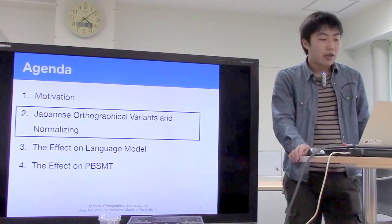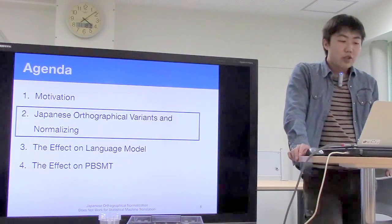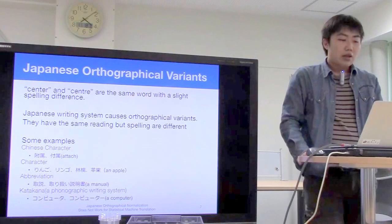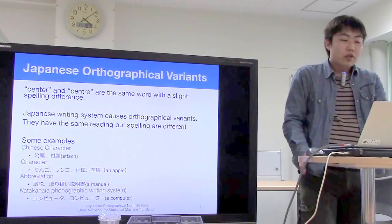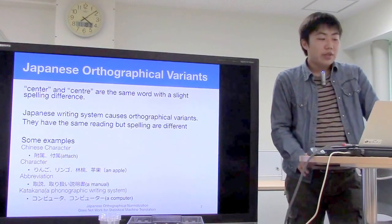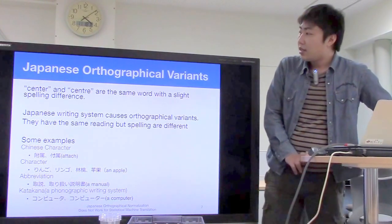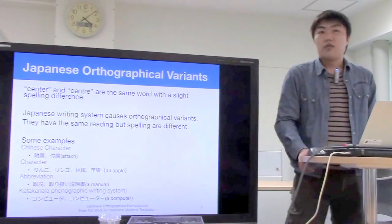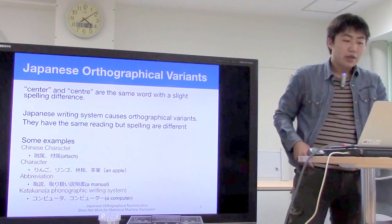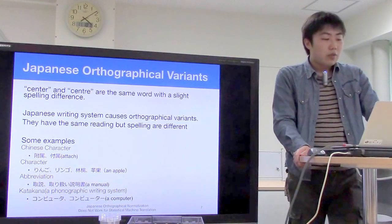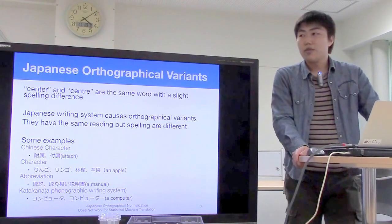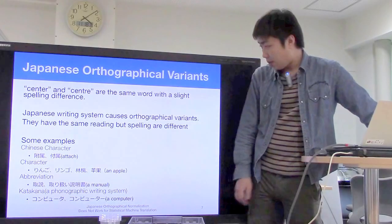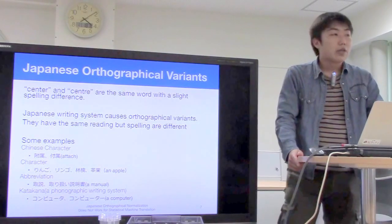Next, I'll explain what Japanese orthographic variance is and how we normalize it. Orthographic variance refers to the same word with a slight spelling difference. In English, there is some orthographic variance — for example, 'center' and 'centre' are the same word but spelling is different. Japanese writing system causes orthographic variance problems; words have the same reading but different spellings.